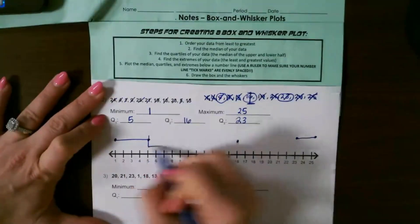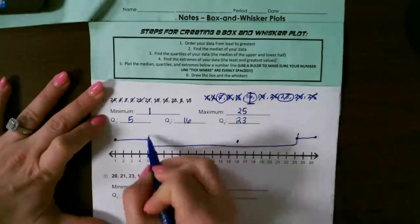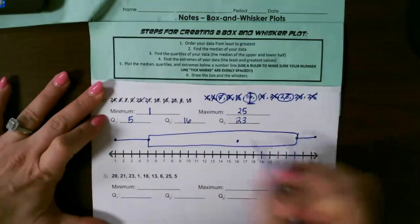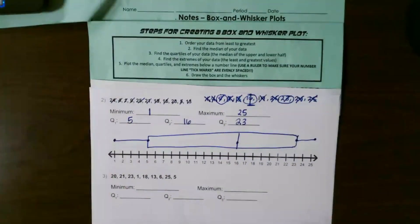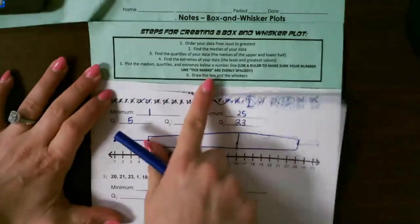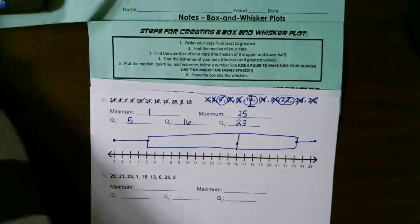And then the inside becomes the box of your box and whisker plot. And that's how you go about creating a box and whisker plot by following these steps listed above.